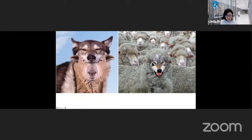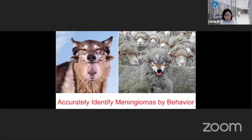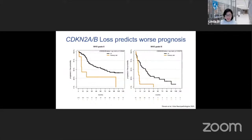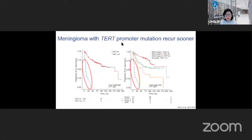So how do we distinguish the sheep in wolf's skin versus the wolf in sheep's skin — in the words of Dr. Al Mefti? Or most importantly, how do we accurately identify meningiomas by behavior? This has been addressed by a number of groups over the years, including with molecular features viewed as quite important: most notably CDKN2A and CDKN2B loss, as well as the TERT promoter mutation, which is observed to associate with poor behavior in many cancers.